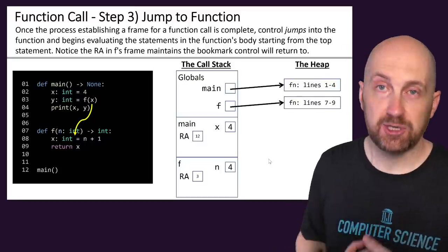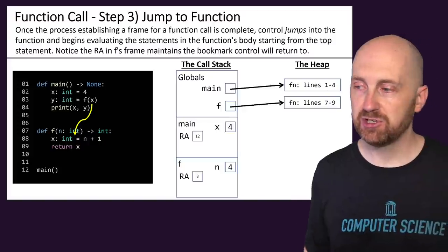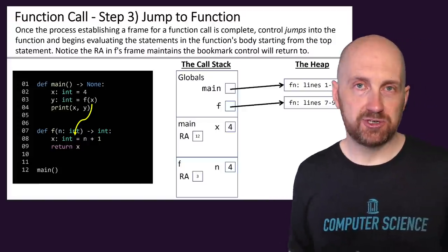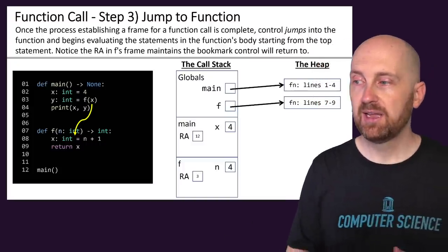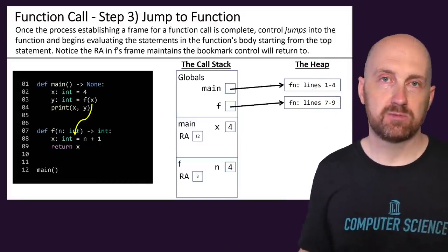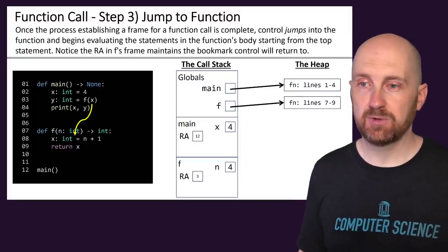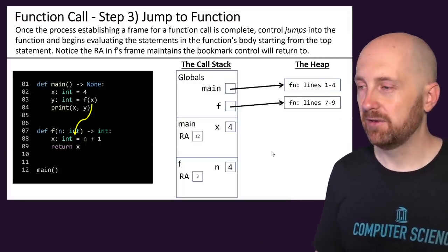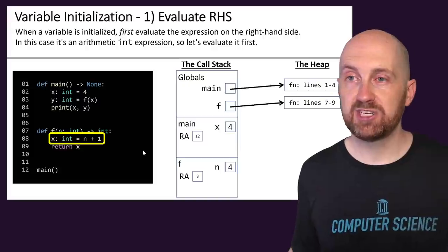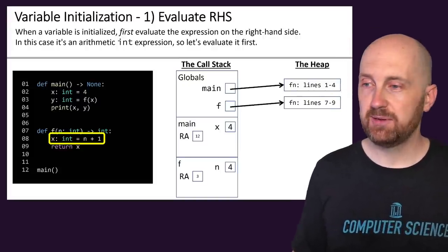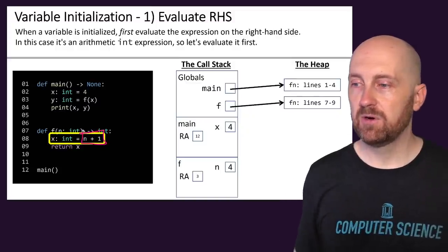Once we've got our return address set up and our parameters fully passed in, that's when we jump into that function definition. Notice that these return addresses are keeping track of our trail of bookmarks — when this function call is done, we'll go back to line 3, and when main is done, we'll go back to line 12. So return addresses are our trail of bookmarks that we can return back to with values. We're about to jump into line 8 and evaluate this f function.